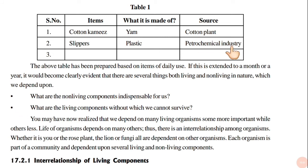If this list is extended to a month or a year, it would become clearly evident that there are several things — both living and non-living in nature — which we depend on. We can see that the things we regularly use include many living things and many non-living things. For example, cotton comes from cotton plants, which are living beings, while the petrochemical industry is a non-living source.